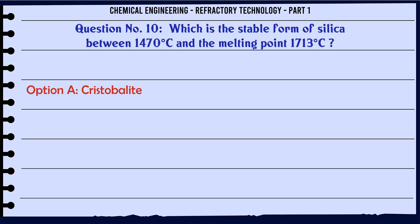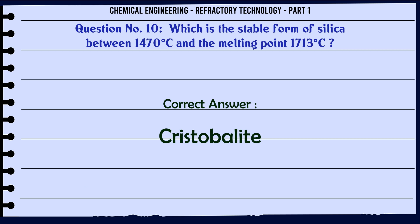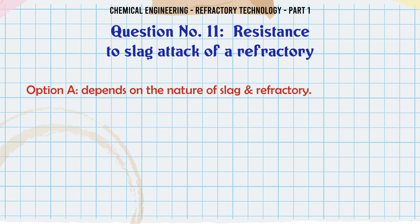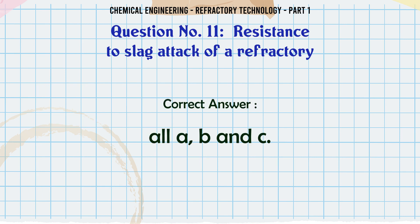Which is the stable form of silica between 1470°C and the melting point 1713°C? A. Cristobalite. The correct answer is Cristobalite.